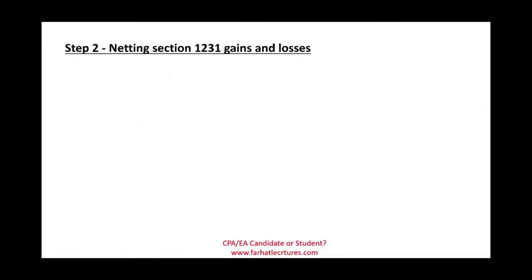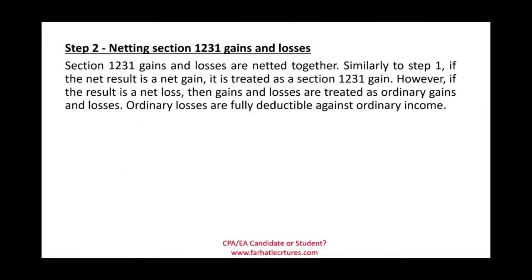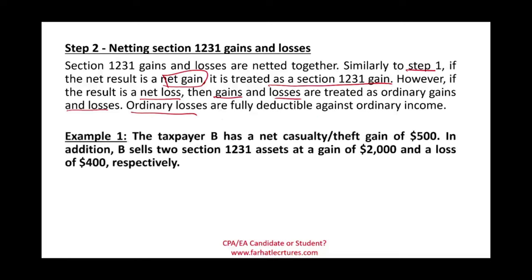Step two: net other Section 1231 gains and losses. Similar to step one, if the net result is a net gain, it's treated as a Section 1231 gain. If the result is a net loss, gains and losses are treated as ordinary gains and ordinary losses, which are fully deductible against ordinary income.